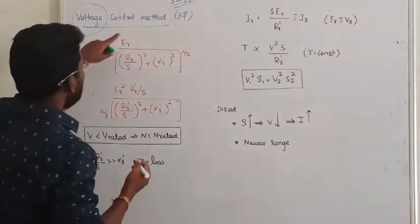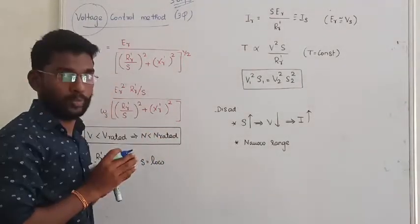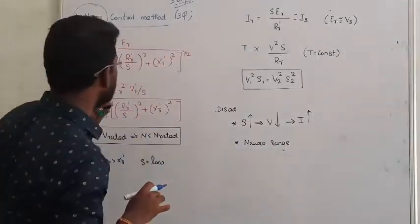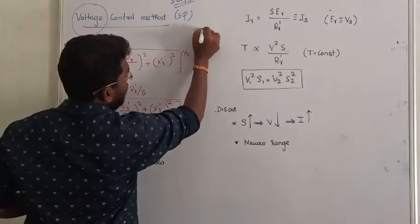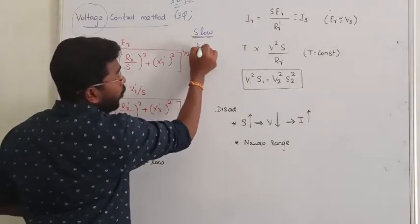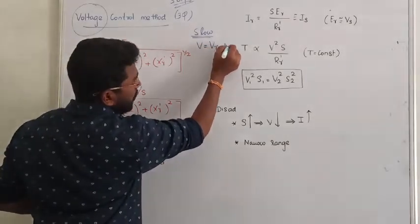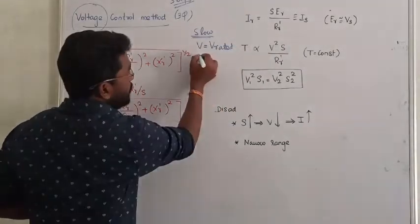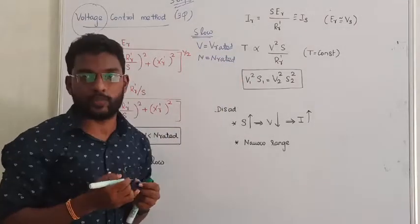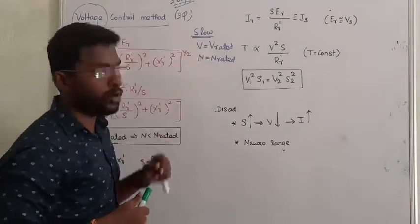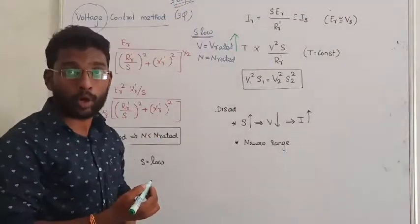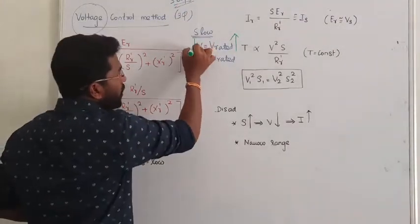The problem is, if we vary the voltage — say rated voltage is being applied — then the motor speed is also at rated speed. Now I would like to control the speed of the motor. The problem is, for all three-phase machines, we cannot go beyond the rated voltage. We can only go below the rated voltage.